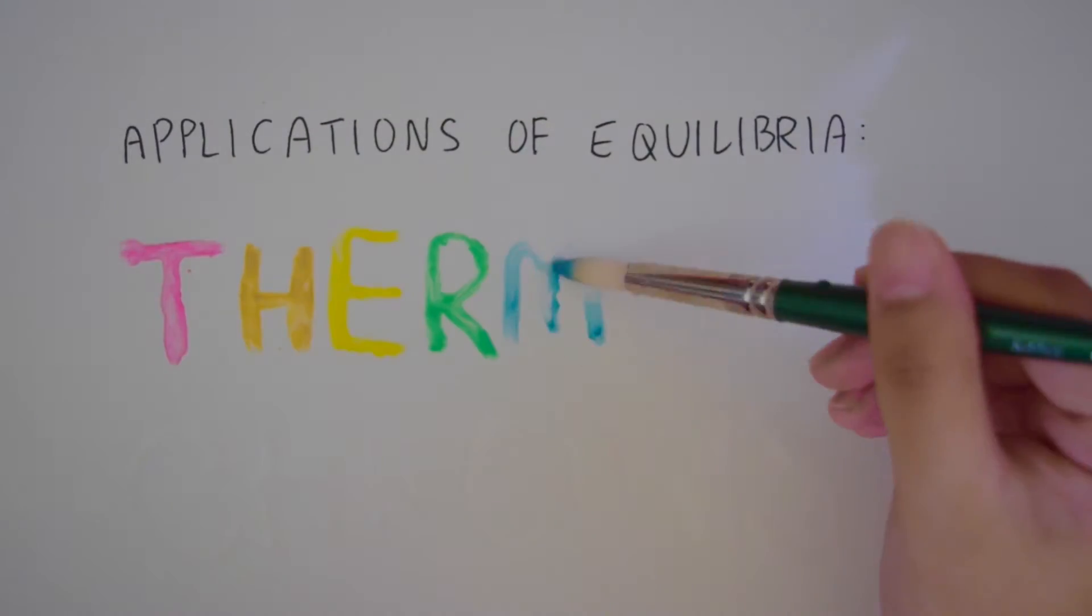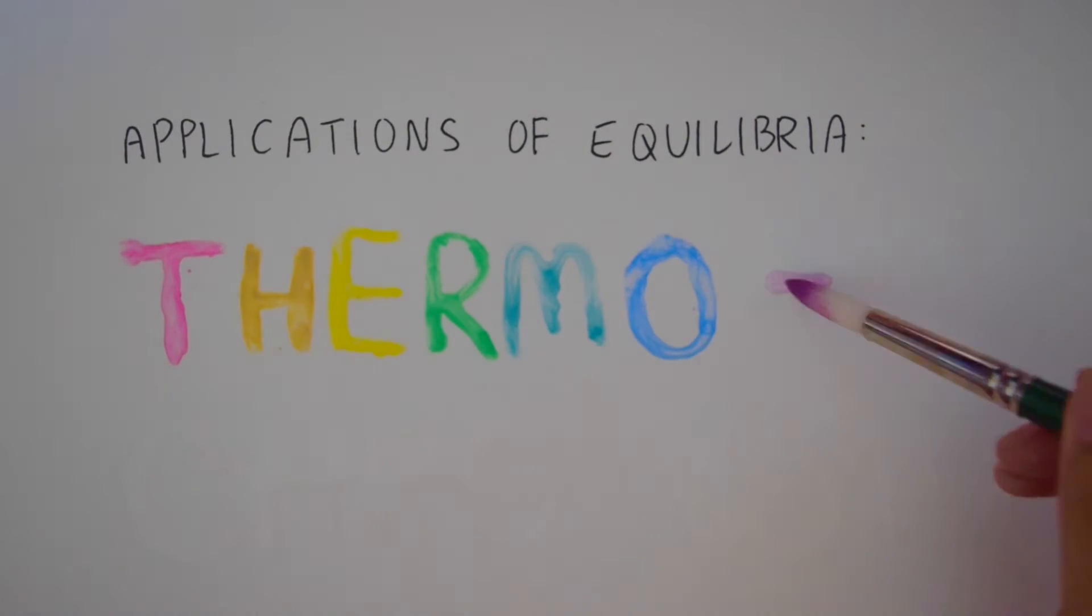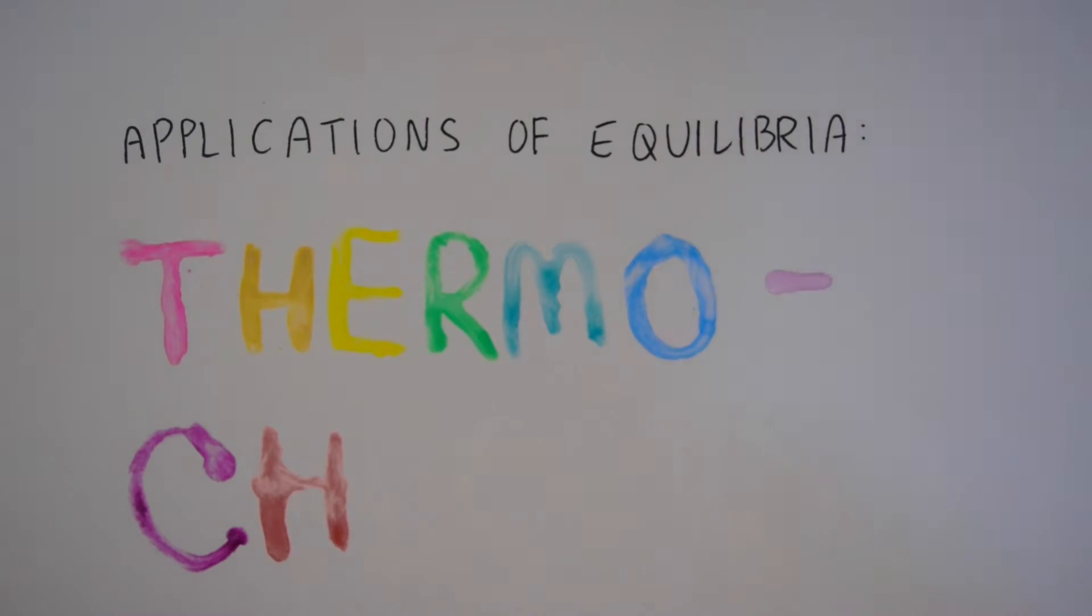As we all know, chemical equilibrium is super fascinating. About 150 years ago, a super cool guy called Harry Lewis Le Chatelier came up with the principles of equilibrium which we are still using today.